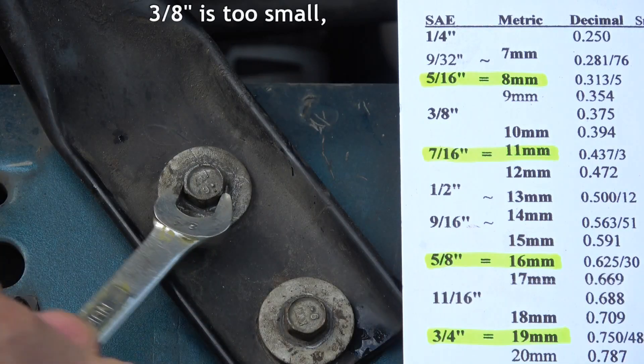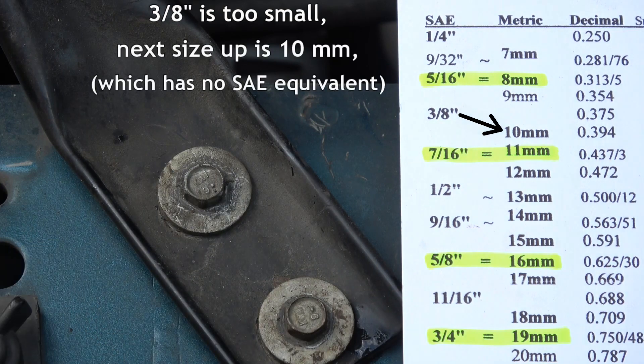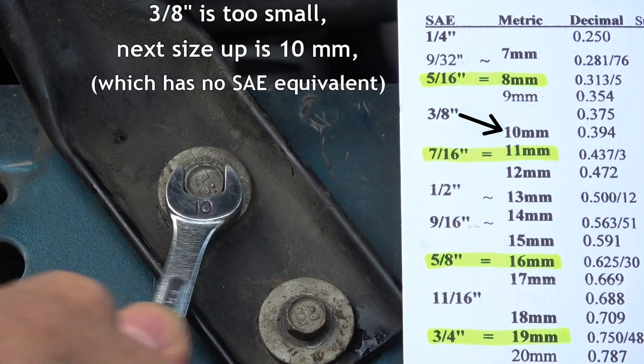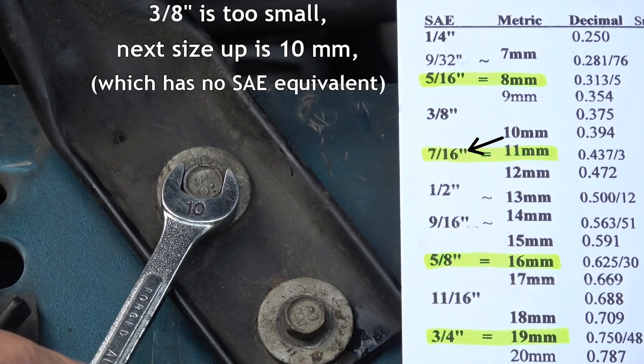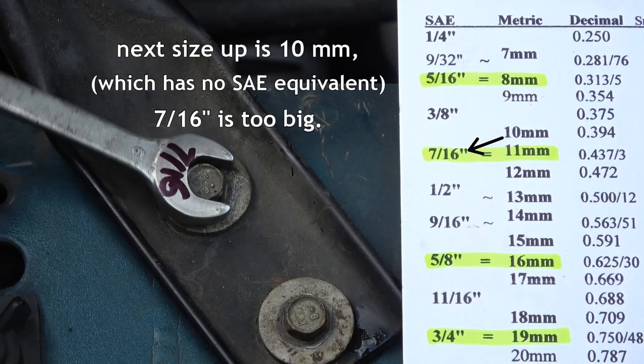If a wrench size is too small, like this 3 eighths inch, look at the chart for the next largest size, which is a 10 millimeter, a very common size with no equivalent in SAE. 7 sixteenths is way too big.